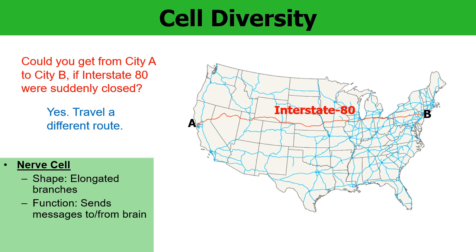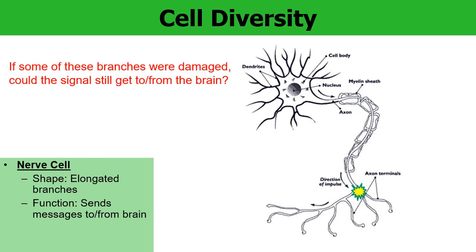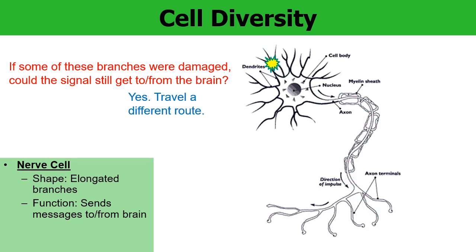The analogy is like the branches on a nerve cell. The branches send signals all around the body. This helps the function of a nerve cell because if some of those branches are damaged, hopefully the signal can still travel through other branches and arrive at the destination. The many branches are actually an advantage to help the cell perform its function. The main idea here is that the shape of a cell is related to the function that the cell performs.